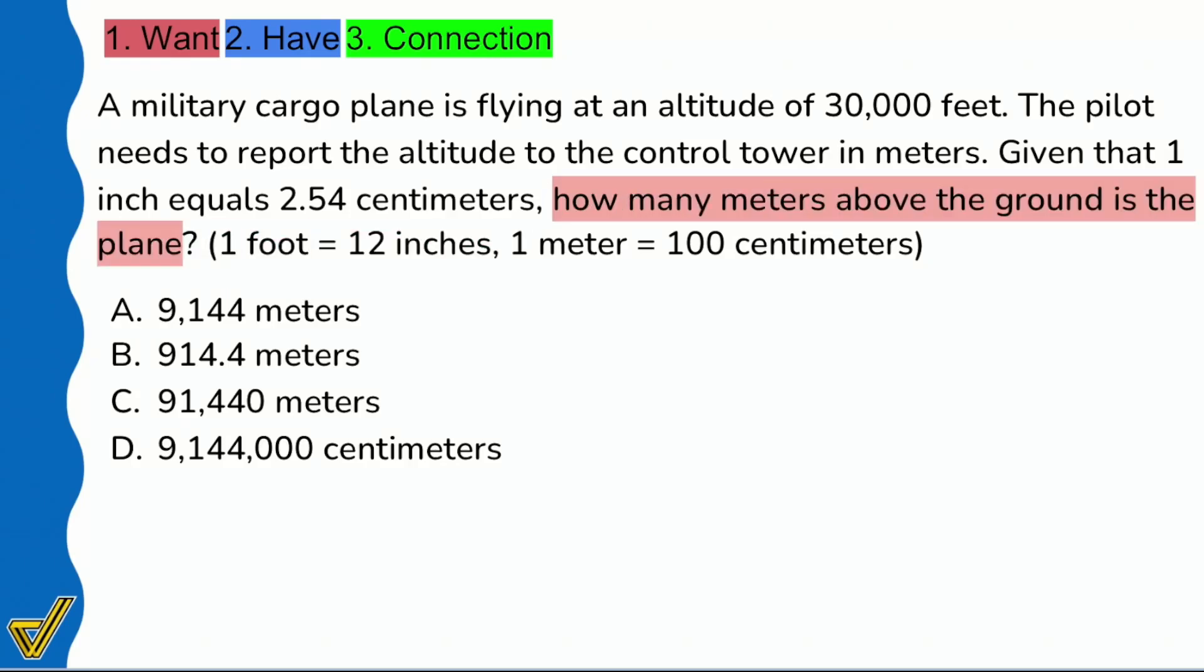Let's understand the information given to us so we can make some sort of plan. A military cargo plane is flying at an altitude of 30,000 feet. The pilot needs to report the altitude to the control tower in meters. Given that one inch equals, okay cool, so that's the given information there.